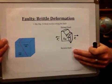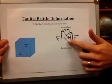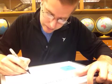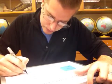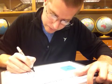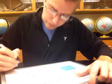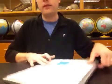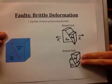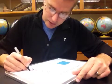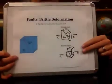The other dip slip fault is a reverse fault, and it's the exact opposite of the normal fault. This time the hanging wall is going to go up the foot wall. We're left with a drawing where the hanging wall has been pushed up the foot wall. From our earlier demonstration, we know the stress in this case must be compression. So this is dip slip — vertical motion along the fault.